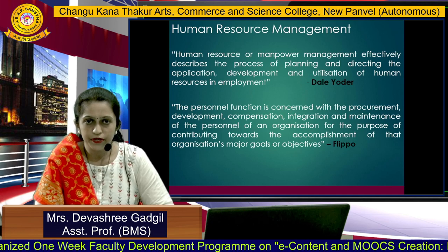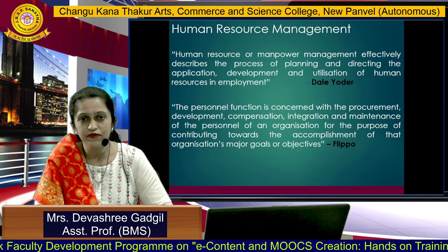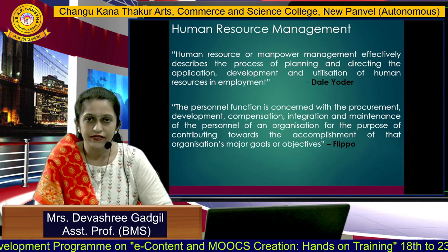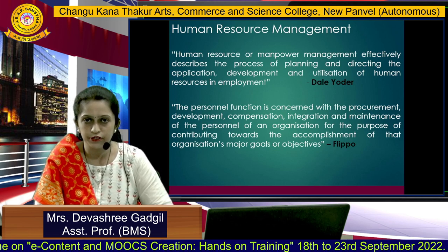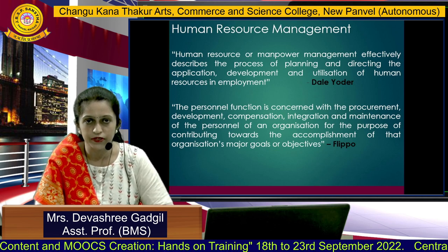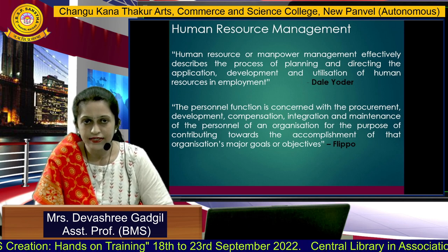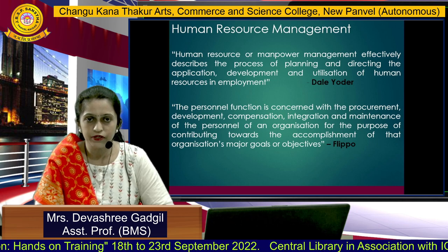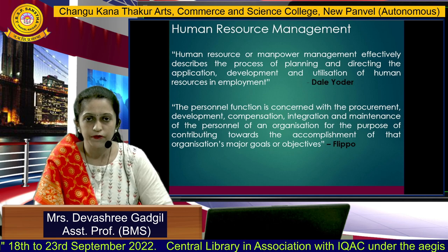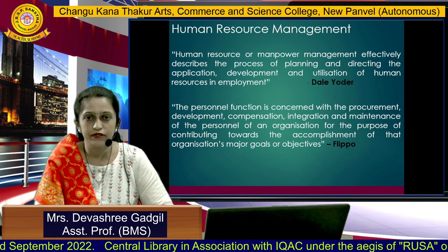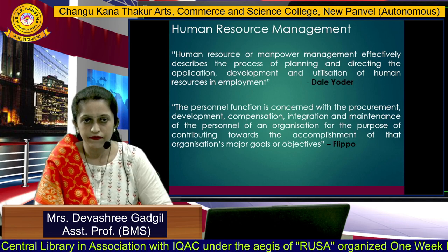The definitions of human resource management are as follows. Human resource or manpower management effectively describes the process of planning and directing the application, development, and utilization of human resources in employment. This definition is given by Dale Yoder. The personal function is concerned with the procurement, development, compensation, integration, and maintenance of the personnel of an organization for the purpose of contributing towards the accomplishment of that organization's major goals or objectives. This definition is given by Flippo.